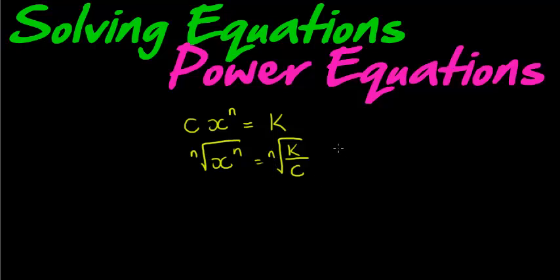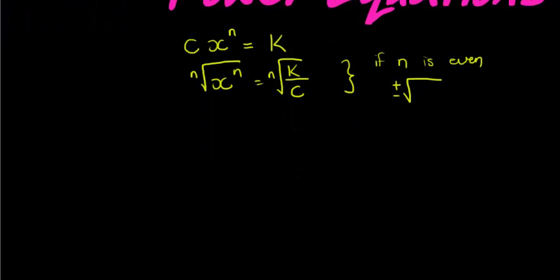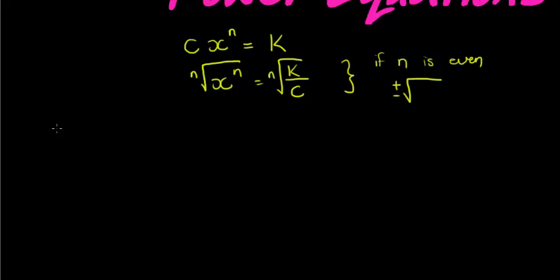There was just one little note: if n is even, we said we should take a plus or a negative. Now another problem we have when n is even, something else I need to mention: when n is even, but k over c is...